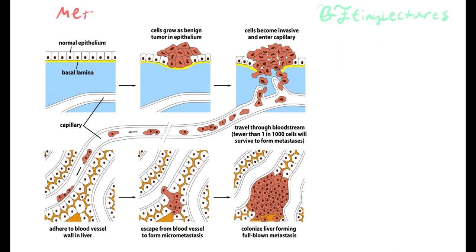Here we have a diagram of metastasis — the process of tumor movement. We have the normal epithelium, and here we have tumors. At first they are benign, meaning they don't move. But eventually these tumor cells have the chance of growing and growing, and literally leaking into the bloodstream. When the cancer cells leak into the bloodstream, they will travel to different parts of the body. If it's in the lungs and metastasizes into the liver, we will have cancer in the liver as well. You can have cancer in one part of the body and it can travel to another part — this metastasis of cancer is very, very bad.